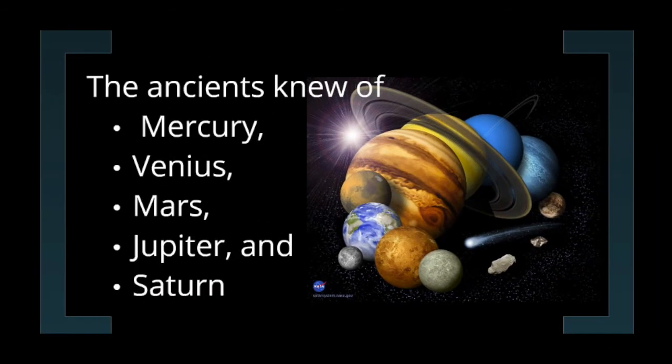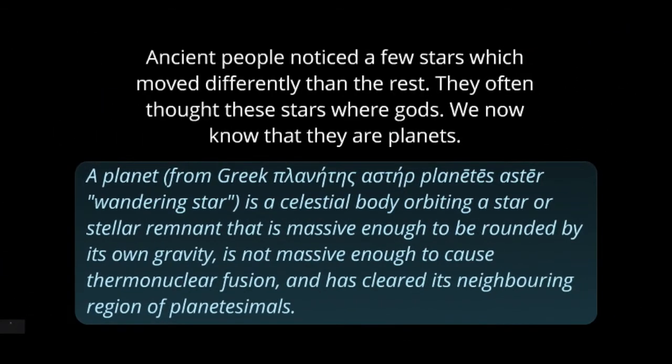Another thing that we see in our sky are the planets. The ancient Greeks knew of the planets. Even the ancients before the Greeks knew of the planets. The planets we can see easily are Mercury, Venus, Mars, Jupiter, and Saturn. We knew these planets were different from the stars because they moved through the sky differently than the stars did. So what is our definition of a planet? The word planet comes from the Greek, meaning wandering star.